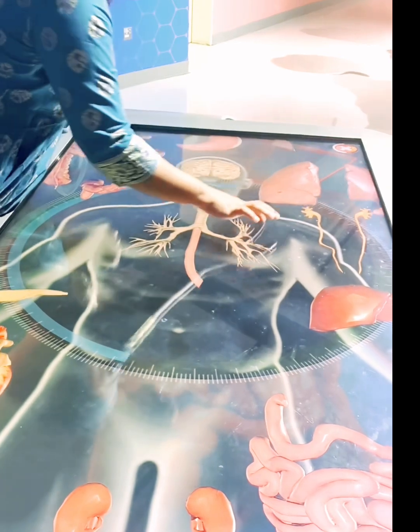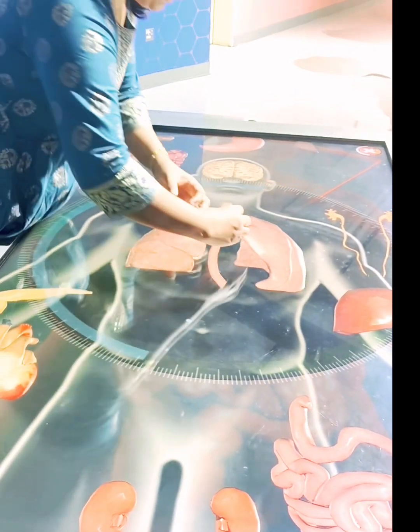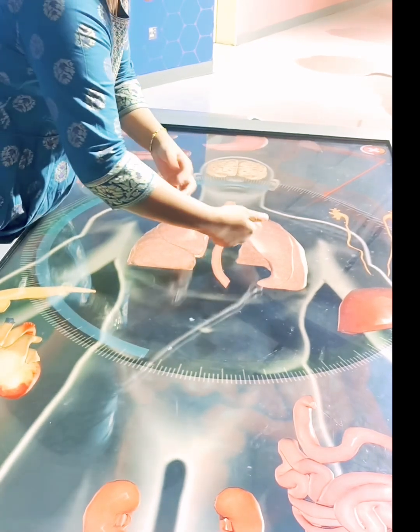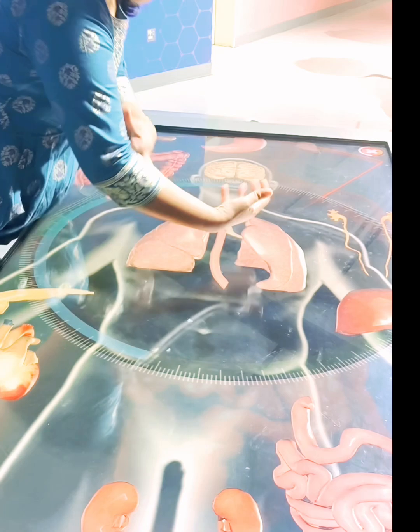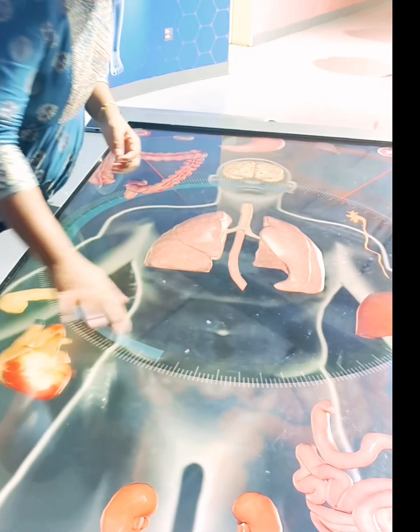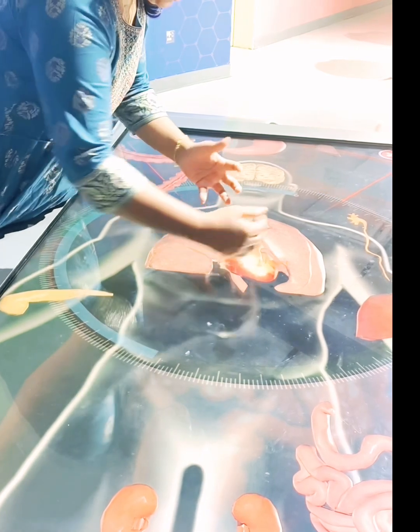Now let's get back to the trachea. So the trachea branches into bronchus, bronchioles, and then we have the two lungs, right lung and the left lung. So these are the lungs. The functions of the lungs are it helps the oxygen-filled air to enter the red cells in the blood.